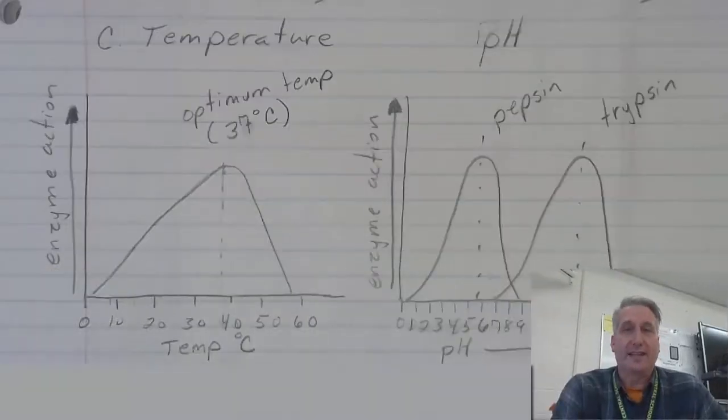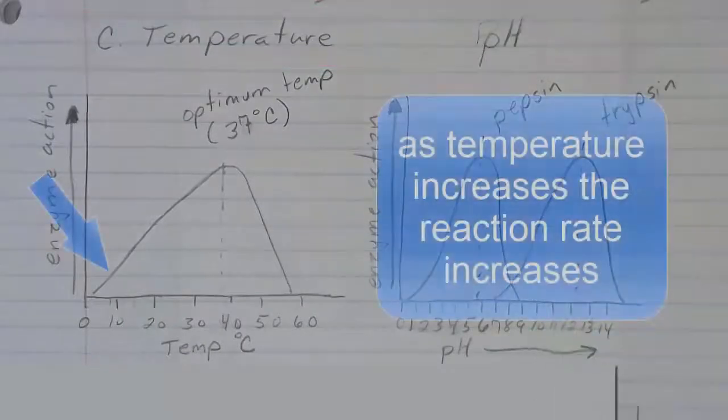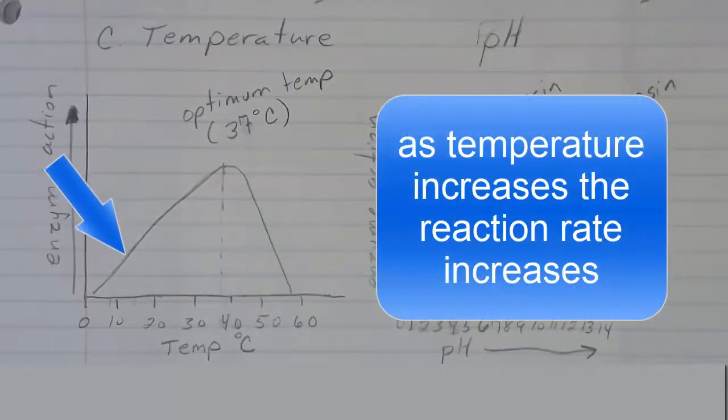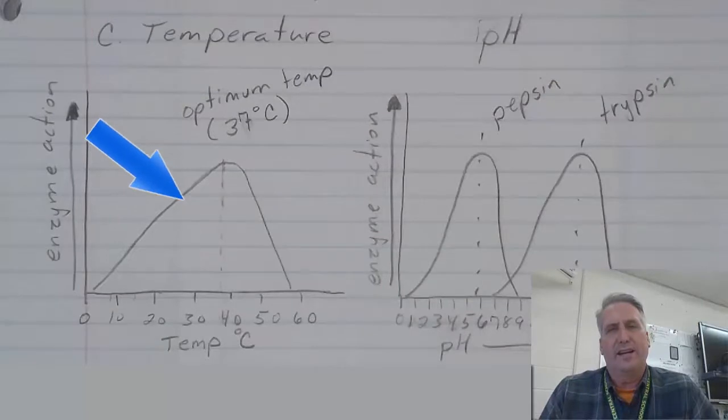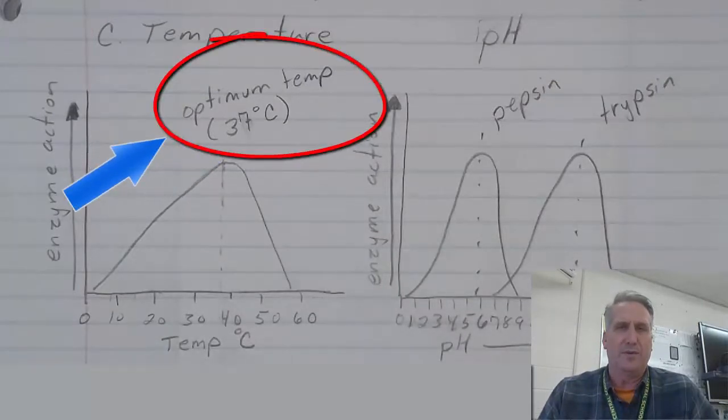The other two factors that affect enzyme action are temperature and pH. As the temperature increases, the reaction rate also increases. The increased temperature causes the molecules to move more quickly, which allows the enzymes to bind with the substrates more quickly and catalyze the reactions. The reaction rate continues to increase until it reaches its optimum temperature.